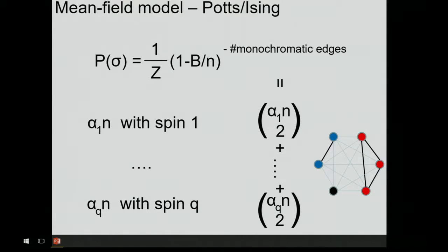Let's go to the Potts/Ising model. I'm looking at the model on the complete graph with n vertices. A configuration has some vertices with spin one, some with spin two, up to spin q. The number of monochromatic edges is easy to figure out from this since there is no structure in the graph. The weight of a configuration is something like exp(b/n × number of monochromatic edges) — equivalently, replacing one plus b/n by e to the b/n.